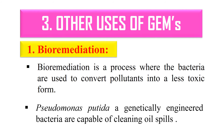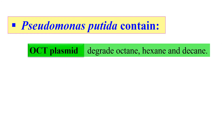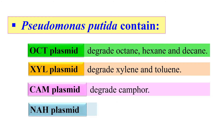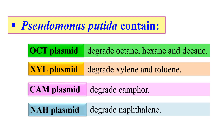For example, genetically engineered bacteria capable of cleaning oil spills have been developed. Oil generally contains four main groups of hydrocarbons: xylene, naphthalene, octane, and camphor. The oil-eating superbug was developed by Ananda Mohan Chakravarti in 1975, and in 1980 he received a patent on the genetically modified Pseudomonas putida bacterium that would eat up oil spills. This Pseudomonas putida contains four plasmids: the OCT plasmid (degrades octane, hexane, and decane), XYL plasmid (degrades xylene and toluene), CAM plasmid (degrades camphor), and NH plasmid (degrades naphthalene).